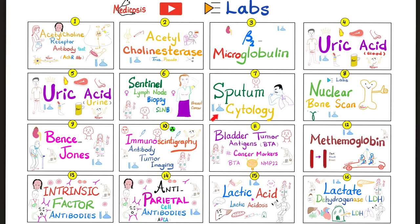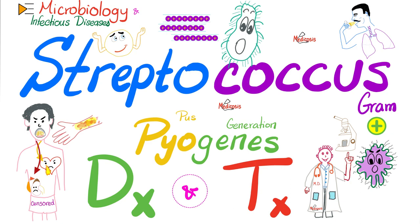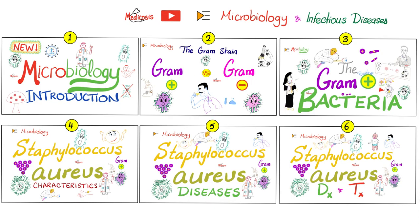Please watch the videos in this playlist in order. If you want to learn about streptococci in great detail, check out the Microbiology and Infectious Diseases playlist on YouTube. This playlist has Staphylococcus aureus, Staphylococcus epidermidis, Staph saprophyticus, Strep pyogenes, Strep pneumoniae, Viridans strep, even Diphtheria, and Anthrax, and much more.